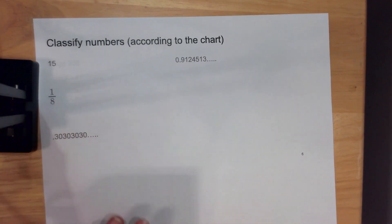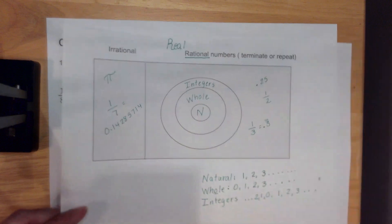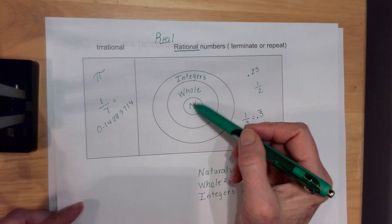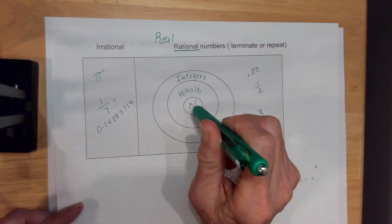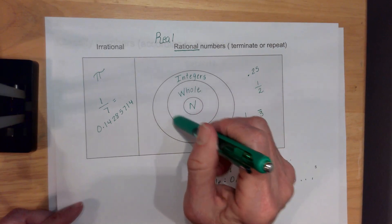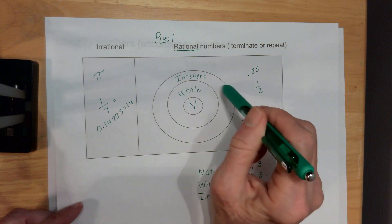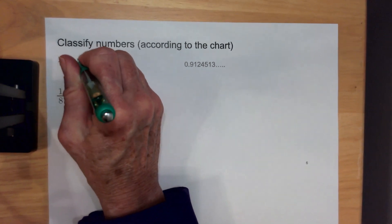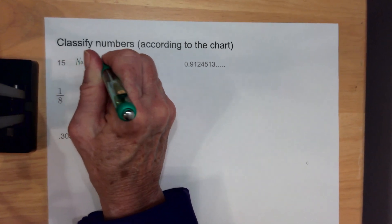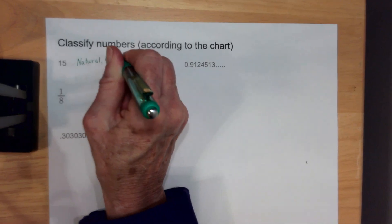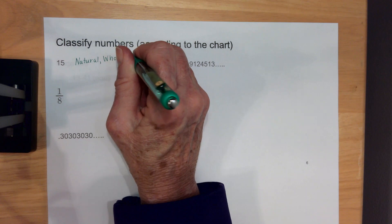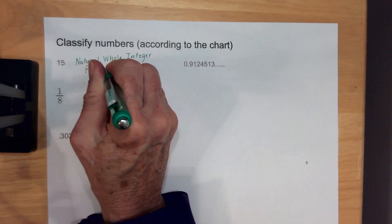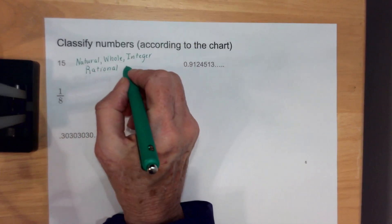So if I have a 15 to classify, the smallest unit I can find 15 in is natural. So it is natural, whole, integer, and rational. If you were standing in the middle of this circle, you would also be in the middle of the next circle, and the next, and inside the rational box. So 15 is natural, whole, integer, rational, and real.